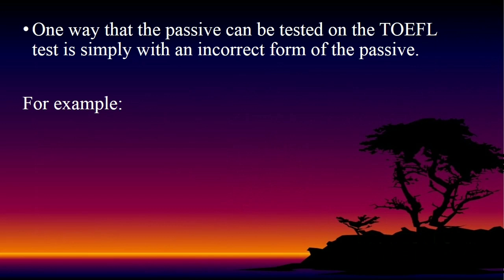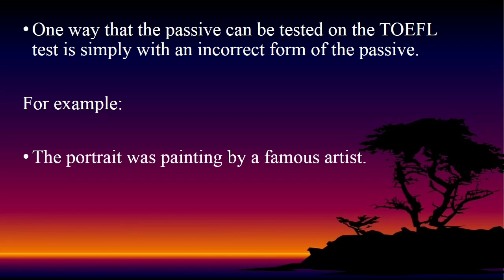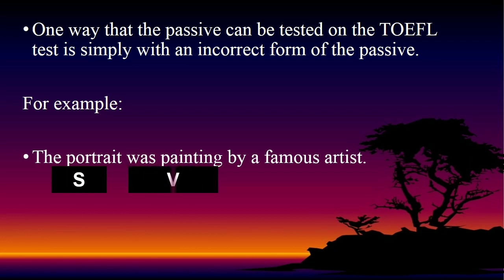For example: 'The portrait was painting by a famous artist.' Let's identify. The subject is 'the portrait' and the verb is 'was painting.' Is it correct or incorrect? Let's focus on the subject — the portrait is definitely painted, not painting on its own. So this sentence should be passive, and the structure is subject + to be + verb 3. The problem is 'painting' — it should be 'painted.' The correct sentence is: 'The portrait was painted by a famous artist.'